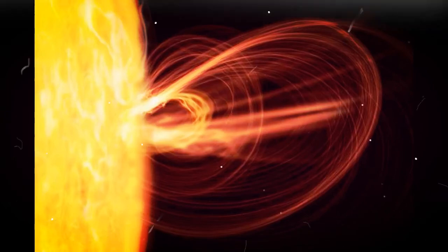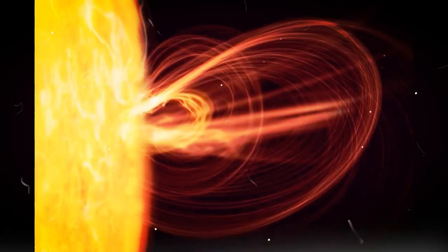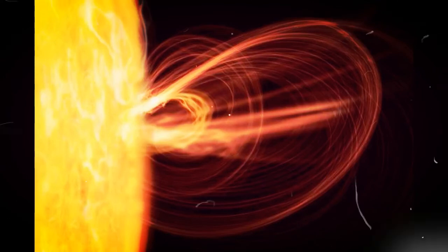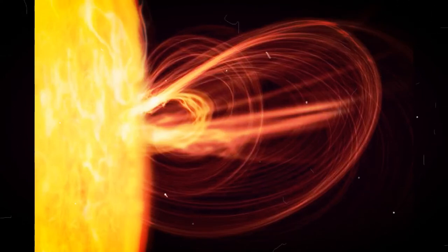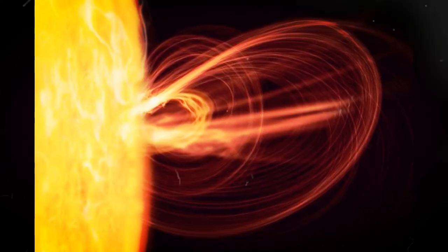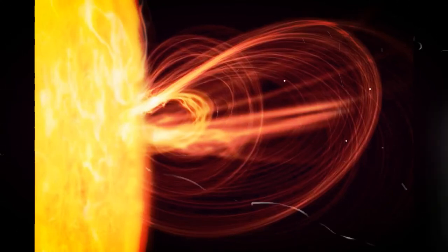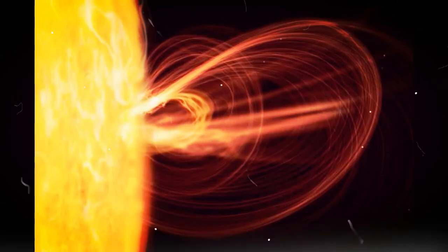Harmful radiation from a flare cannot pass through Earth's atmosphere to physically affect humans on the ground. However, when intense enough, they can disturb the atmosphere in the layer where GPS and communication signals travel.